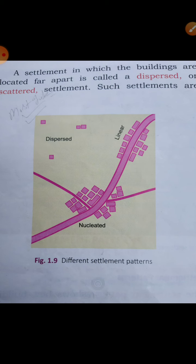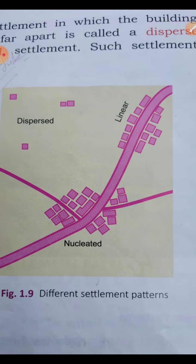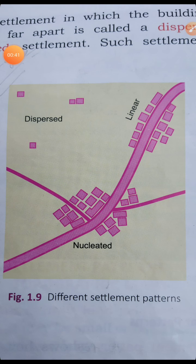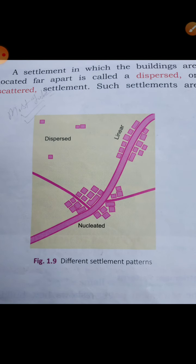Before beginning the writing portion, let me give you an important exercise. You can see this figure showing different settlement patterns. You all are requested to draw this diagram. This is a very important diagram — it can come for your unit test. You all have to draw carefully: these are different types of settlements — linear, dispersed, and nucleated. So like this diagram, you have to make in your notebook. Then let us come on our writing portion.